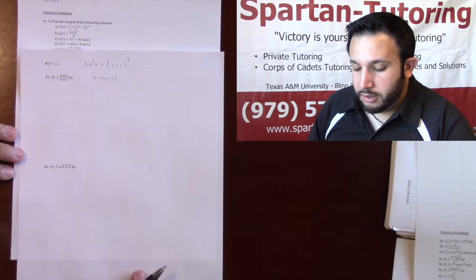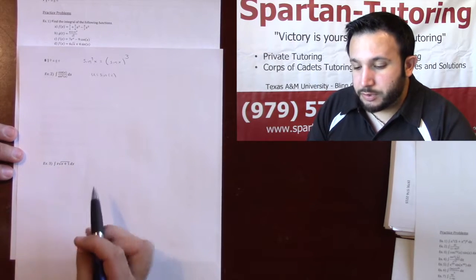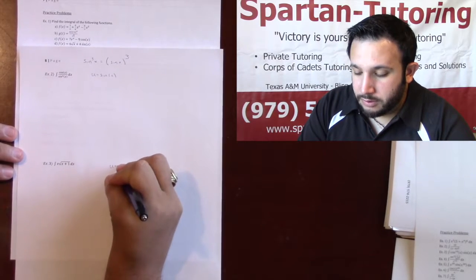Let's take a look at this one, number three. For number three, I have the integral of x square root of x plus one. Notice how this x plus one is inside of a square root, so I'm going to set u equal to x plus one.